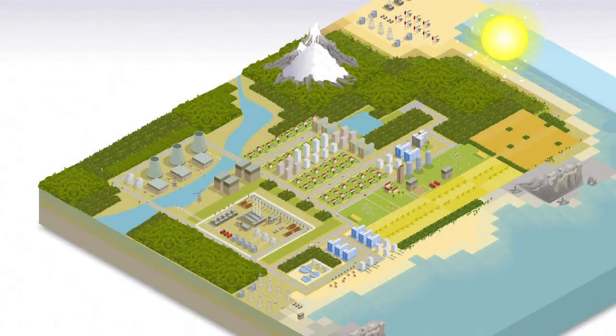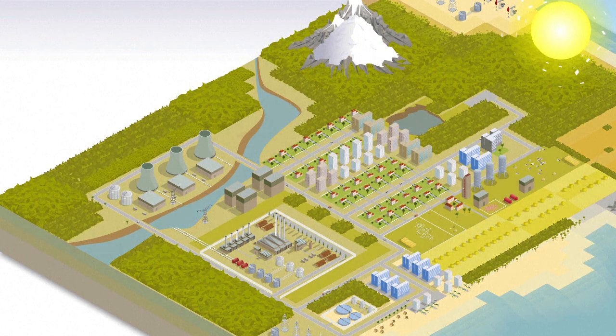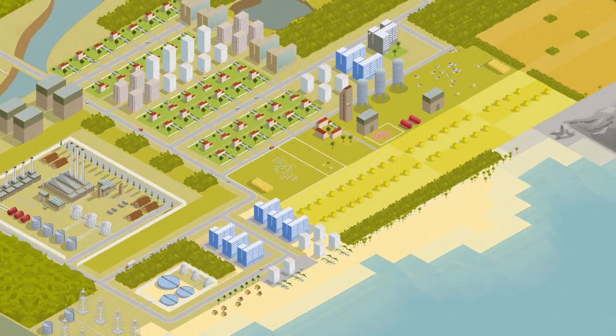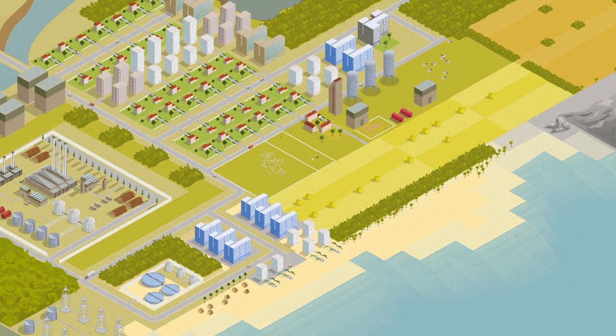A drought occurs when the soil and environment get no or very little water. It can reduce or destroy crop production and affect animals by reducing their feed or by destroying their natural habitat.